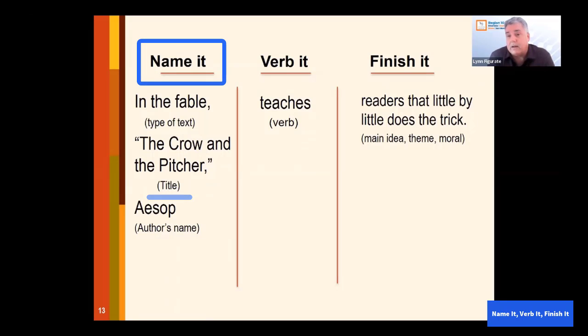Then we have the title of that piece. Here you can see the fable is called The Crow and the Pitcher. Then the author is Aesop.